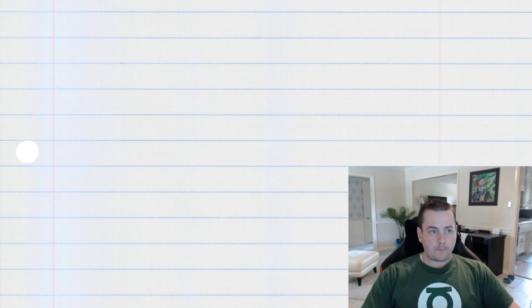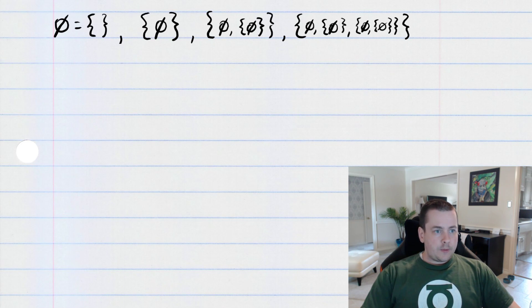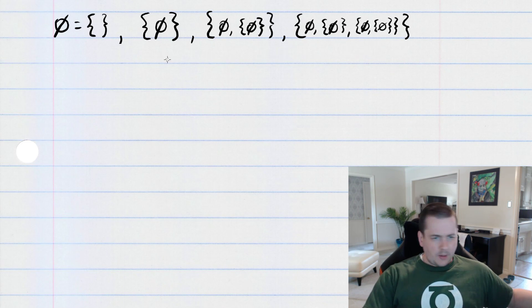Now, in set theory, we talk about these weird symbols to make sets like this, but one of the fundamental axioms of set theory, one of the axioms that you have to start with, is the empty set axiom, and it just says that the empty set exists.